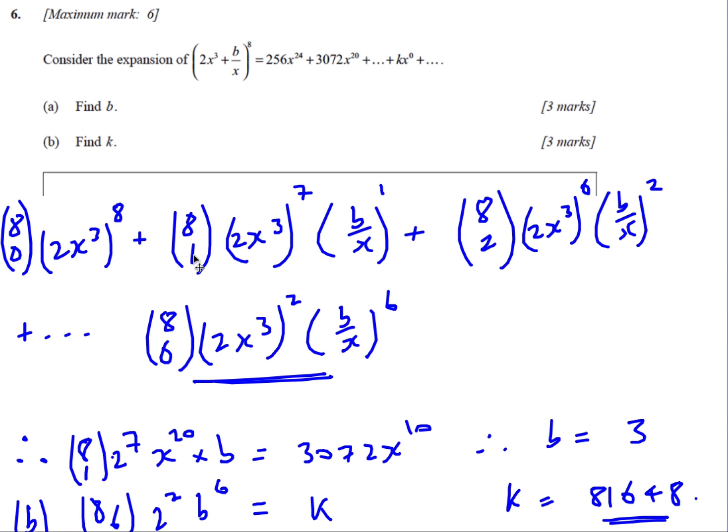If I use this one here, the 8 choose 1, now I've got a 3 and a 7. It's in brackets. I'm going to multiply the powers together. So it's going to give me 8 choose 1, 2 to the power 7, x to the 20, and then I've got a b. And that's going to be equal to... I know that this thing here is 3072. That's x to the 20. And therefore, I just need to work out what is b going to be here. So if I basically do 3072 divided by all of this number here, I'm going to end up with b is equal to 3.